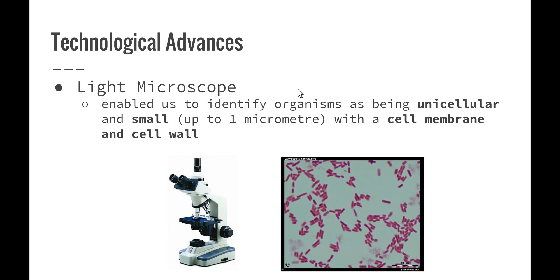So what are some technological advances that have helped us to understand what these prokaryotic organisms are? Firstly, the light microscope. Back in the 1600s, simple light microscopes were produced and this enabled us to identify organisms as being unicellular and small. Before the light microscope came along, we could only see things big enough to see with our naked eye, but now we could see organisms as small as up to one micrometer in diameter. We were also able to identify the presence of a cell membrane and the cell wall in our prokaryotes.